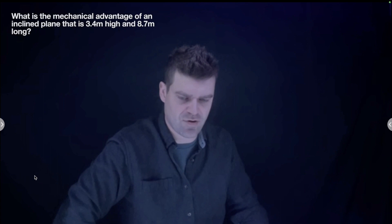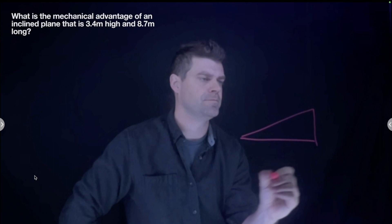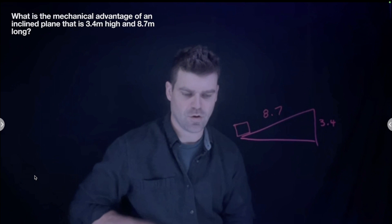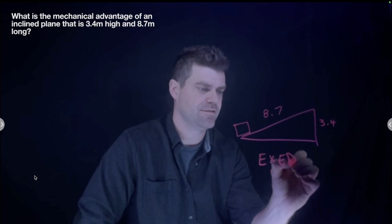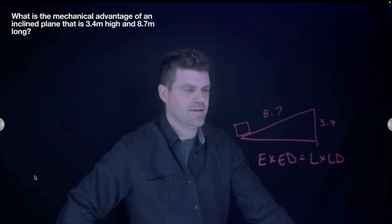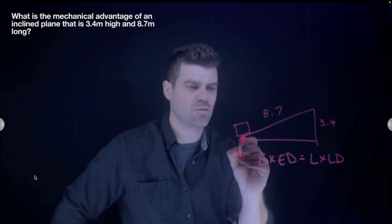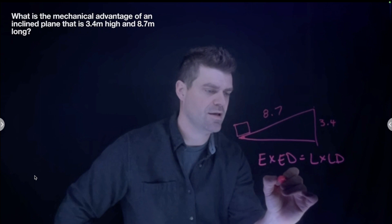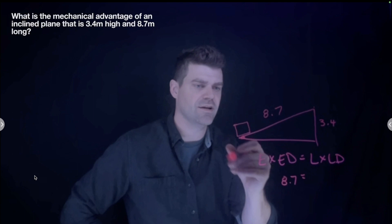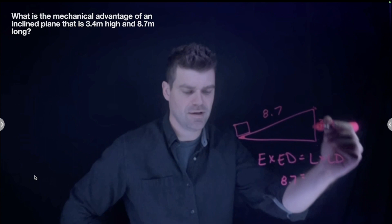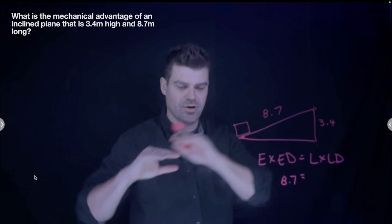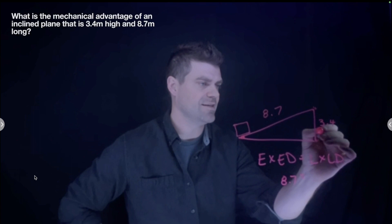What is the mechanical advantage of an inclined plane that is 3.4 meters high and 8.7 meters long? Let's draw that out. Using the same formula — Effort × Effort Distance = Load × Load Distance — the effort distance is the distance we're traveling from the bottom of the ramp up to the top, which is 8.7 meters. The load distance is not the ramp length but the vertical distance we're actually moving against gravity, which is 3.4 meters.